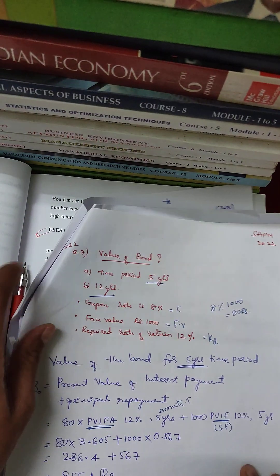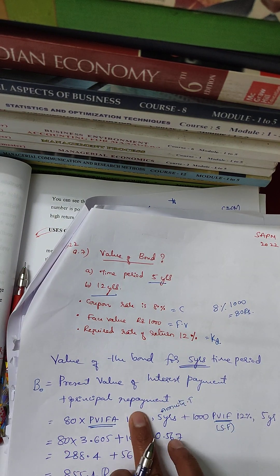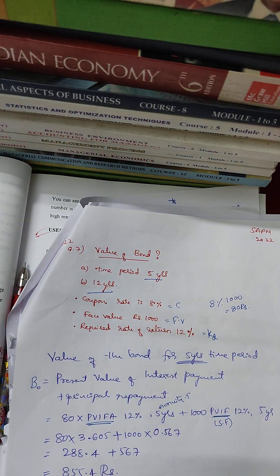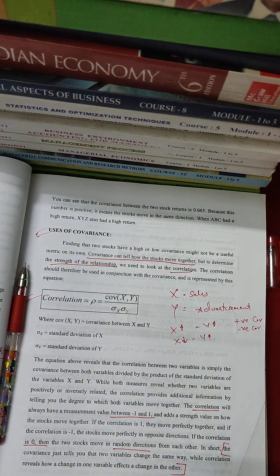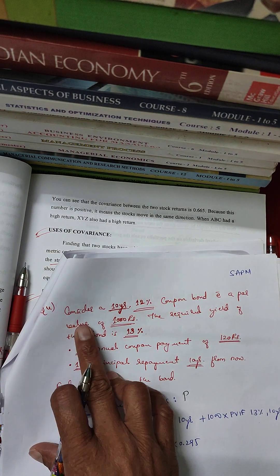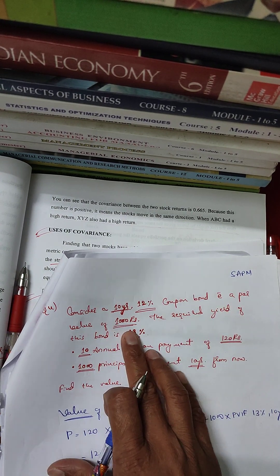The most important factor is the formula: present value of interest payment plus principal repayment. Now, the next question is from 2021. Consider a 10-year, 12% coupon bond with a par value of 1,000 rupees. The required yield of this bond is 13%. There are 10 annual coupon payments of 120 rupees, since 12% of 1,000 is 120 rupees.